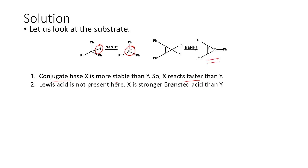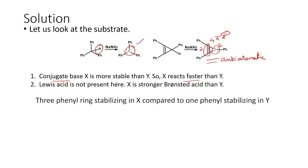The conjugate base of Y is less stable because it has a negative charge on the cyclopropyl ring along with a double bond. This system has two electrons from the negative charge and two electrons from the pi bond, giving 4 pi electrons total. According to Hückel's rule, a 4 pi electron system is anti-aromatic and therefore highly unstable. So X has the highly stable resonance-stabilized carbanion and reacts faster than Y.